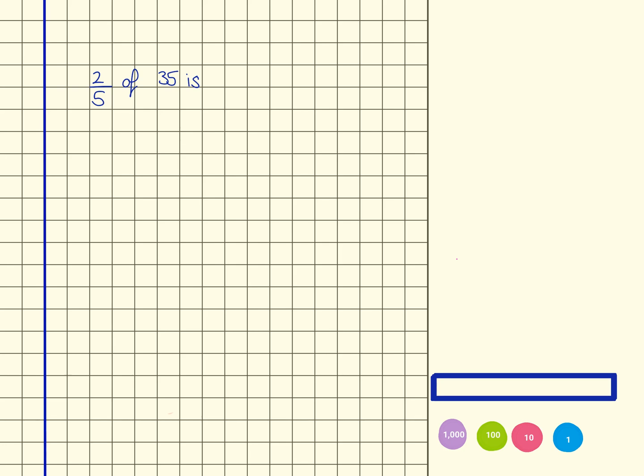2 fifths of 35. So I'm going to start by getting a bar and altering the shape so that it is fifths.